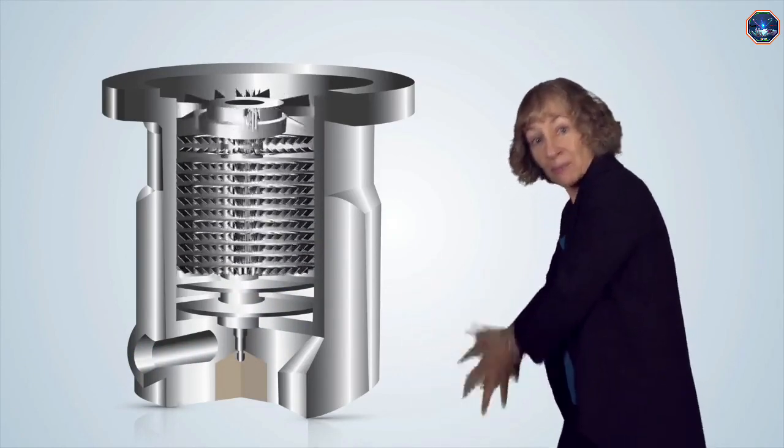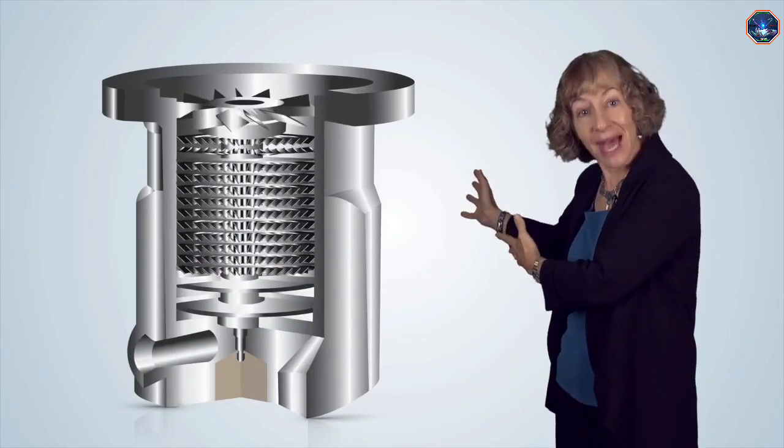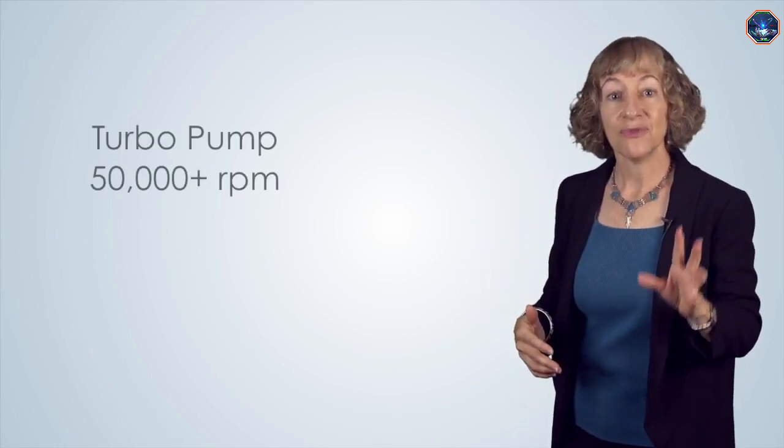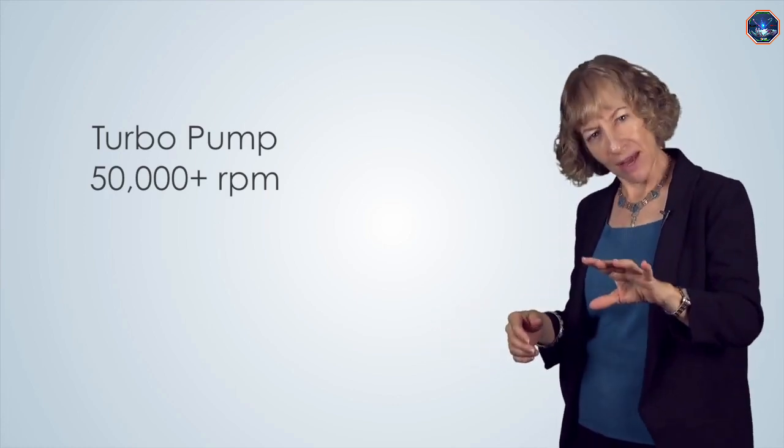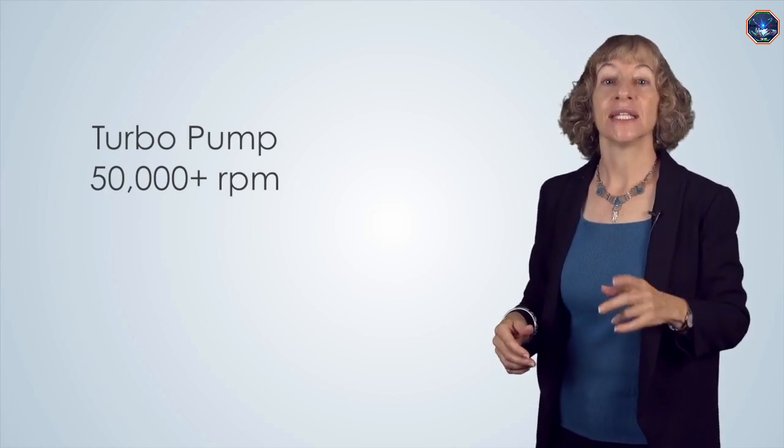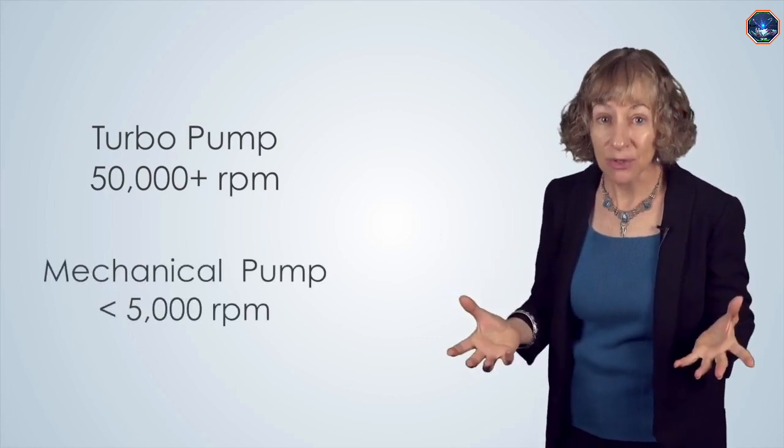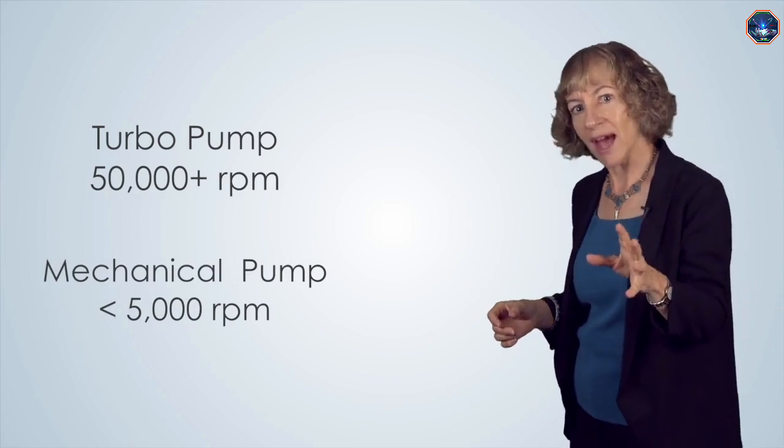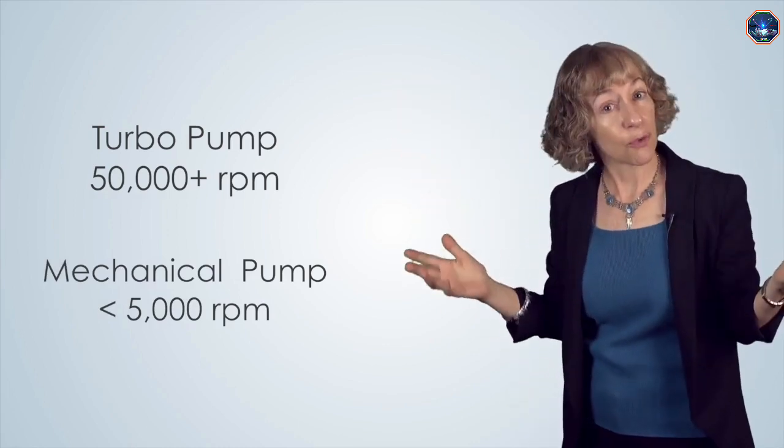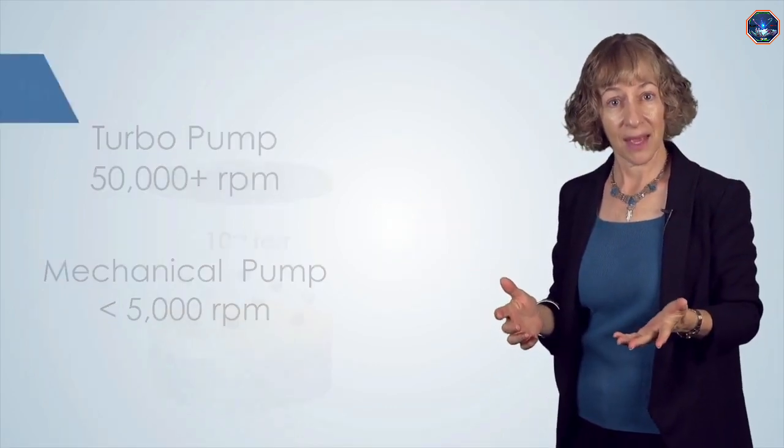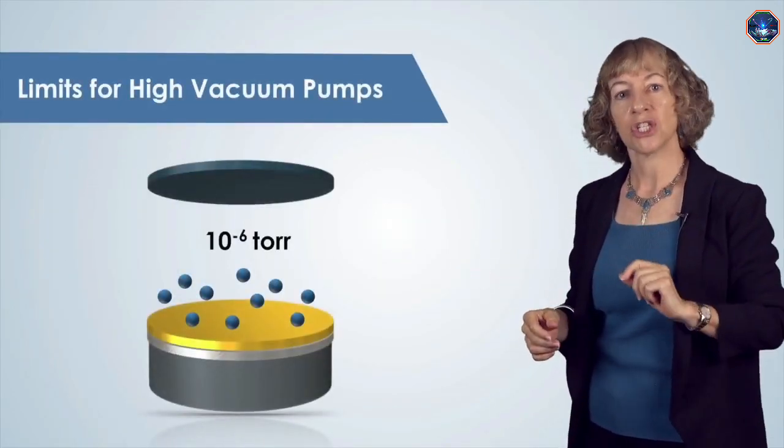The air molecules that the turbo pump collects make their way out of the outlet of the turbo pump, which then are pumped by the mechanical pump that is backing the turbo pump. The pumping ability of a turbo pump is related to the speed of the turbines, which typically spin at 50,000 revolutions per minute or more. Compare that to a typical mechanical pump which rotates at less than 5,000 revolutions per minute. Now this is still pretty fast—a helicopter rotor typically spins at only 400 to 500 rpm.